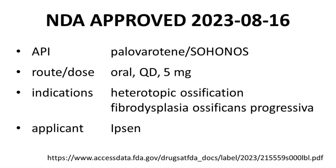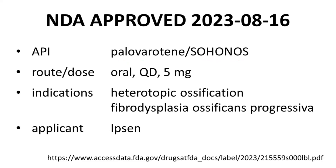Palaveratine was approved by the FDA on the 16th of August in 2023. The drug had already been approved for use in Canada. The active pharmaceutical ingredient is palaveratine, which is the U.S. adopted name. The branded name of the drug is Sohonos, in all caps. Palaveratine is administered once a day orally, and the typical dose is 5 mg with adjustments for patient mass and higher doses possible in certain situations. Palaveratine has two indications: heterotopic ossification and fibrodysplasia ossificans progressiva. Ipsen sponsored the NDA.